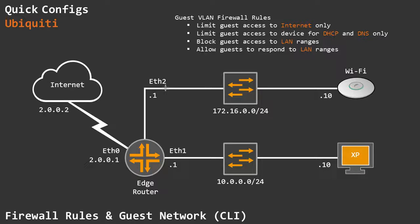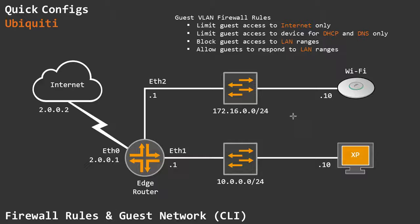I also have my eth2 interface in the 172.16 network, and this is basically my guest network range, on which I'm pretending there's a UniFi access point — it's actually just an Xubuntu Linux machine, but for our purposes it works just fine. With this guest access, we ideally want to limit them to have access to the internet only, so we want them to be able to traverse the device and go out to the internet, with that traffic being allowed back.